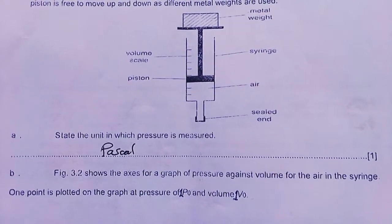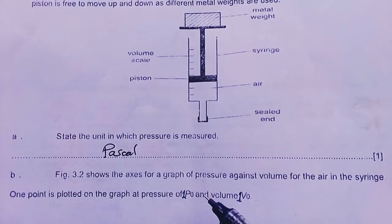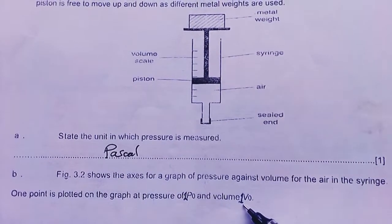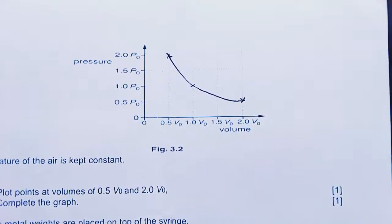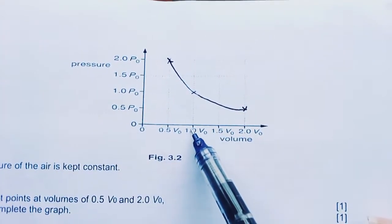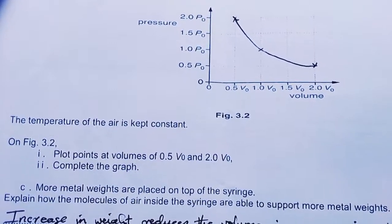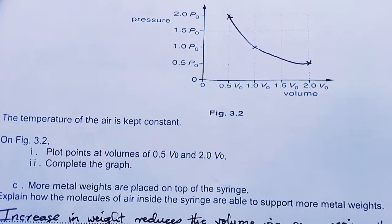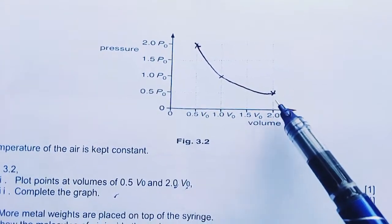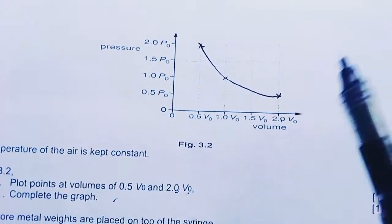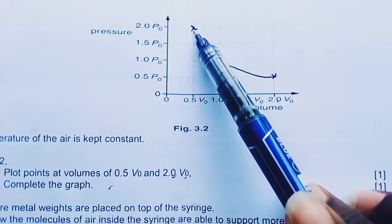Figure 3.2 shows the axis for the graph of pressure against volume for the air in the syringe. One point is plotted on the graph at pressure 1 and volume 1. There is our graph. The temperature of the air is kept constant. On figure 3.2 plot points of volumes of 0.5 and 2.0, then complete the graph. To plot these points, you should have understood Boyle's law. PV is equals to a constant. The graph comes out as a curve, a decay curve.